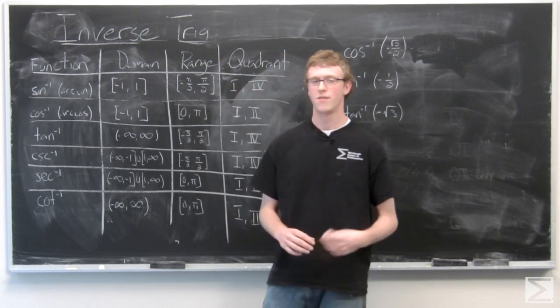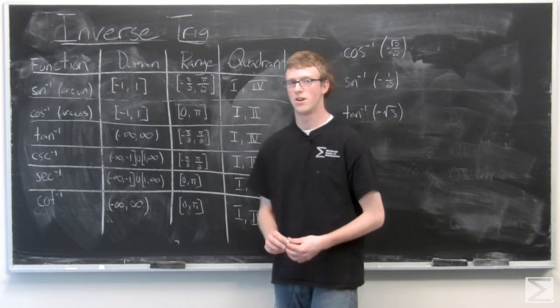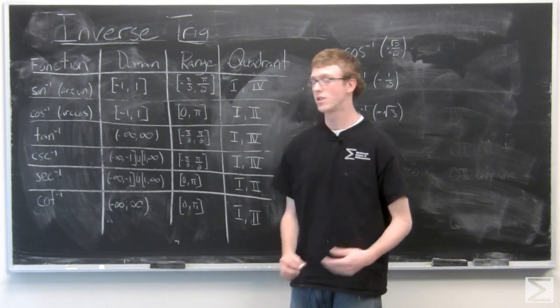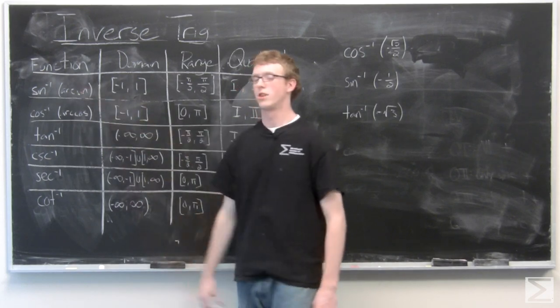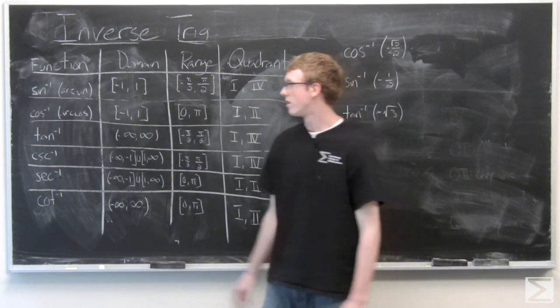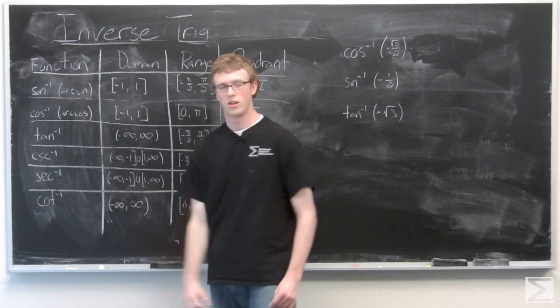We can go ahead and find angles based on those coordinates with inverse trig functions. So typically the inverse trig functions are denoted with either a negative one or an arc in front of it.